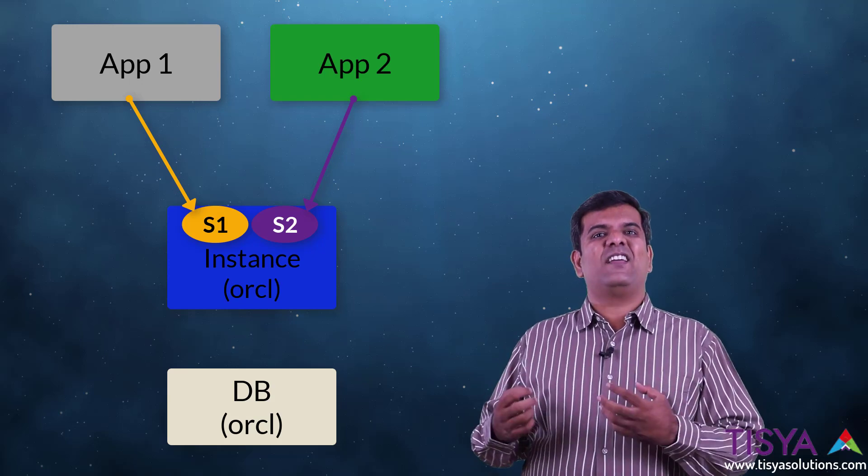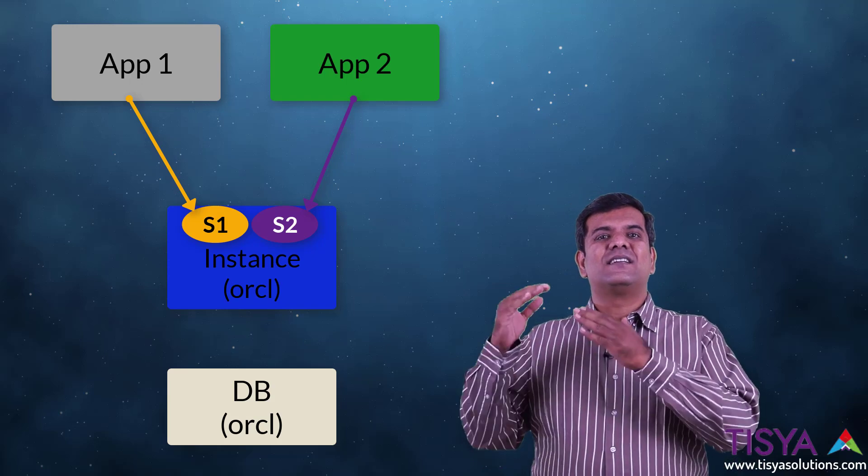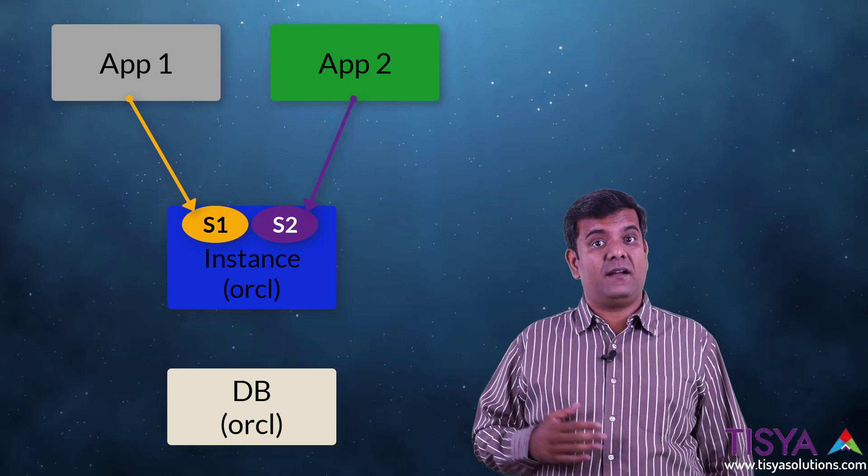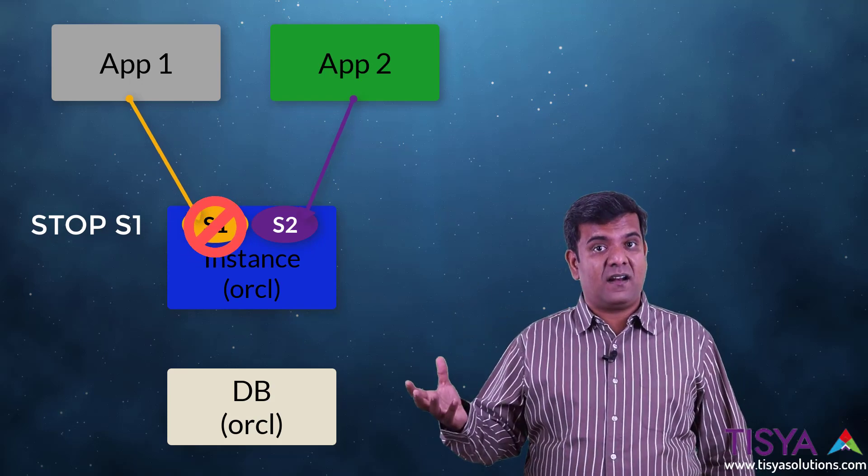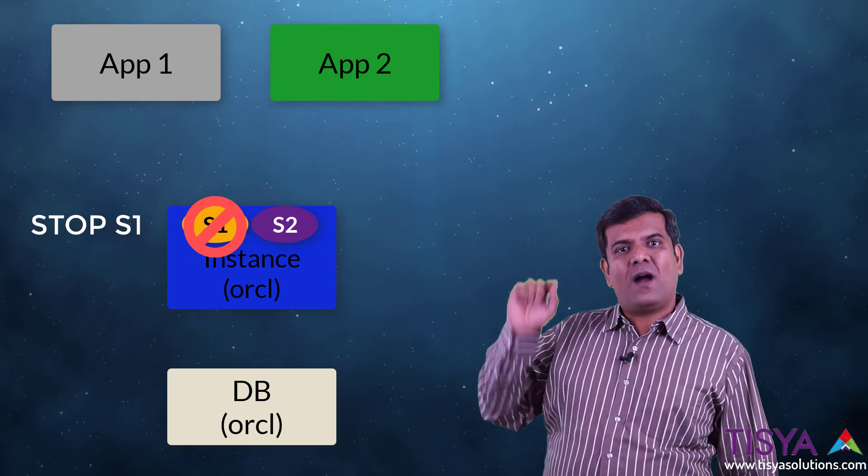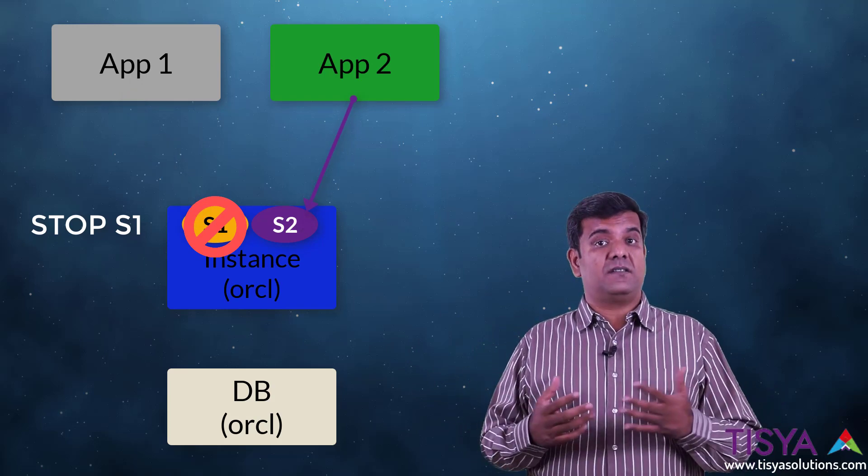Beyond this, let's say you don't want one application to connect to the database. You can just stop the service. So you don't want application one to connect, you can just stop serve one. Serve two will be running, the instance is still running. But when application one makes a connection request, it will not be able to connect because the service is down.